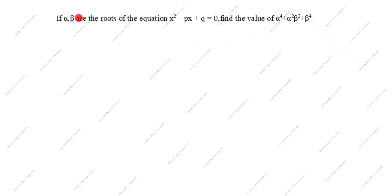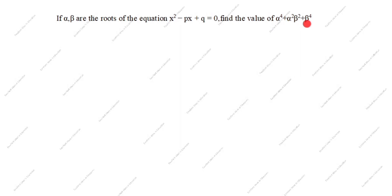Hi friends, welcome to my channel Excellent Ideas in Education. Today we are going to solve this polynomial problem. This is a very important problem. If alpha, beta are the zeros of the equation x² - bx + q = 0, find the value of alpha⁴ + alpha²·beta² + beta⁴.